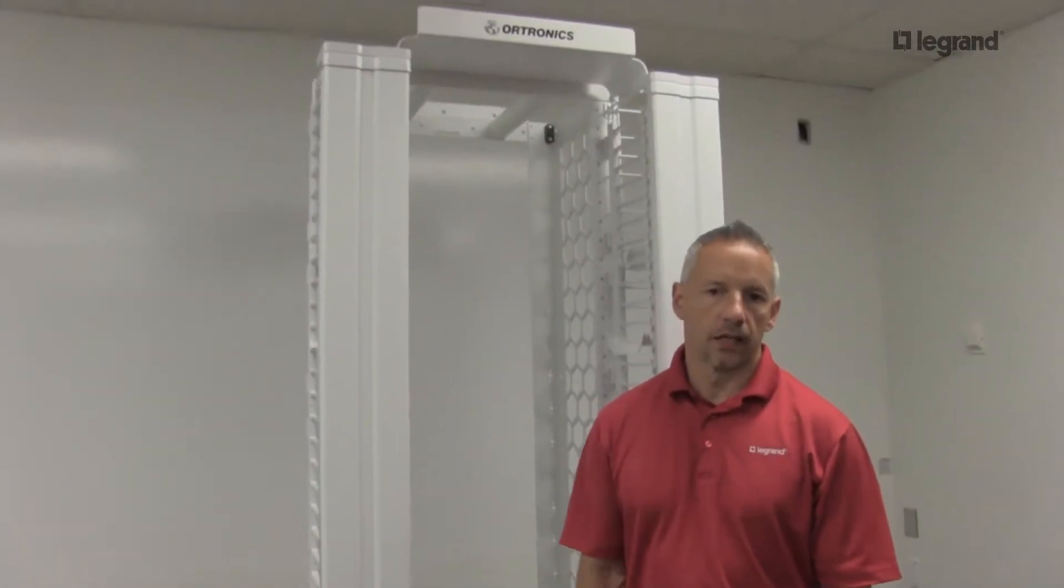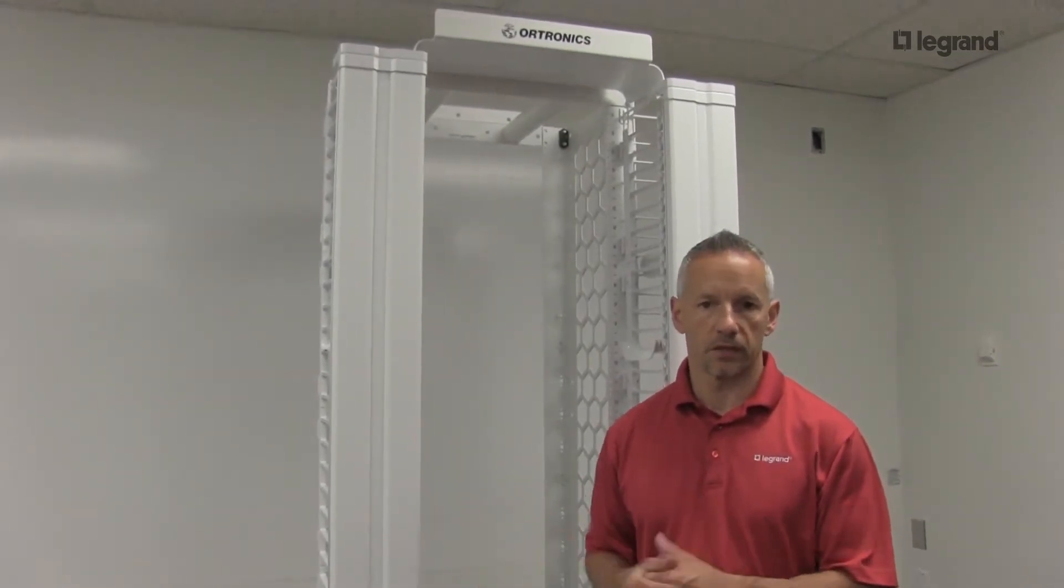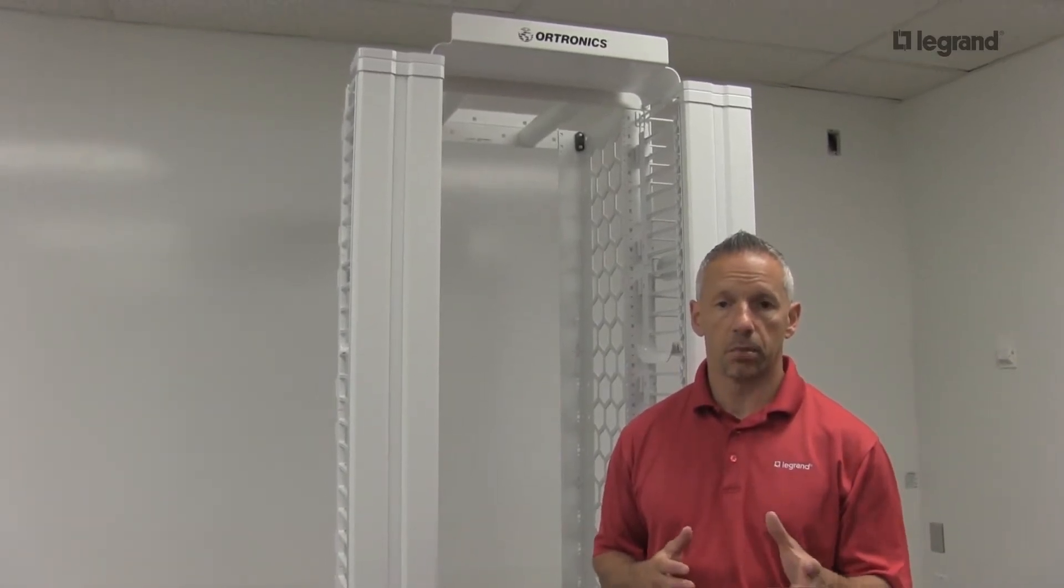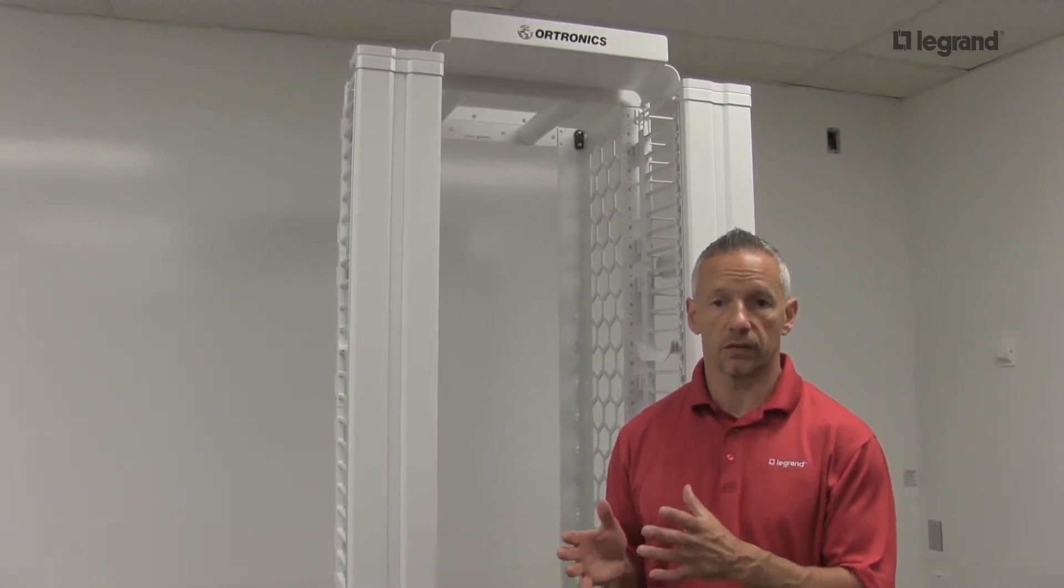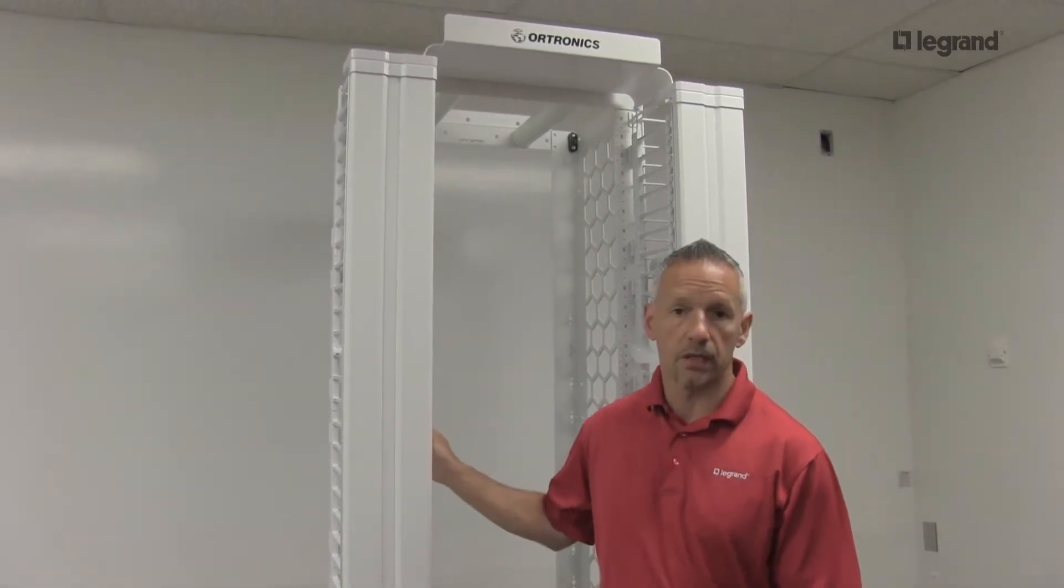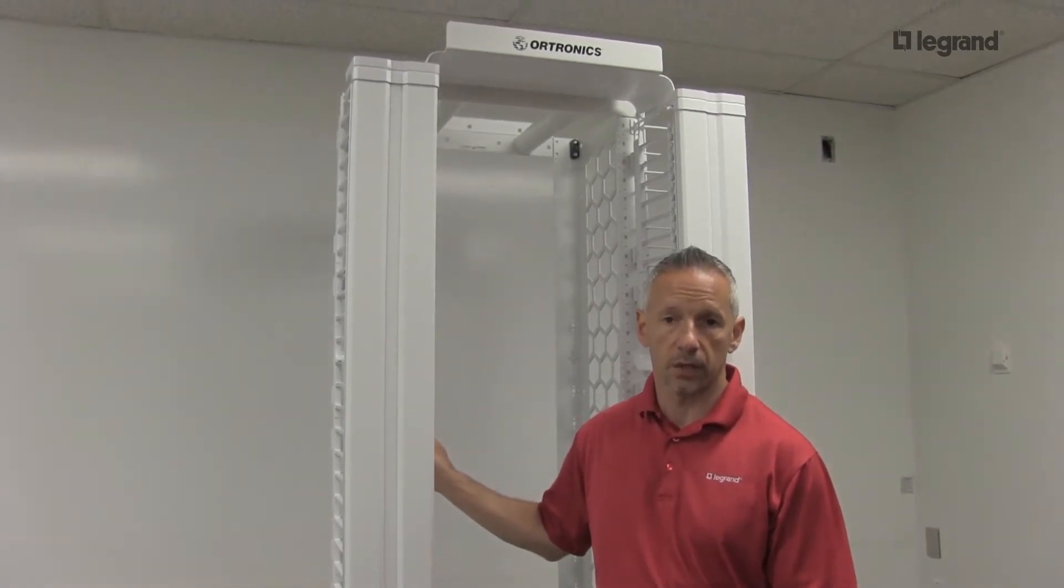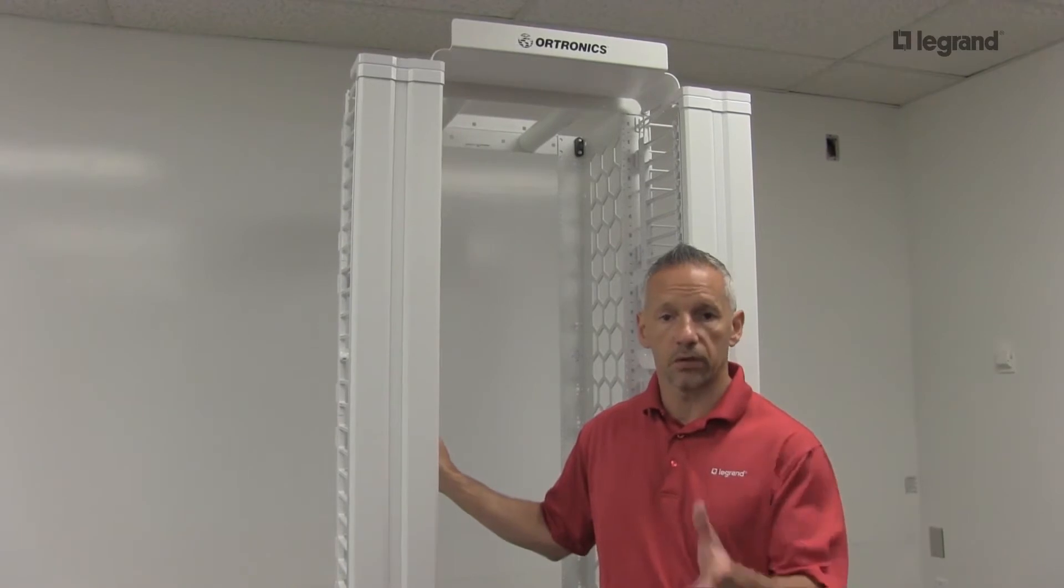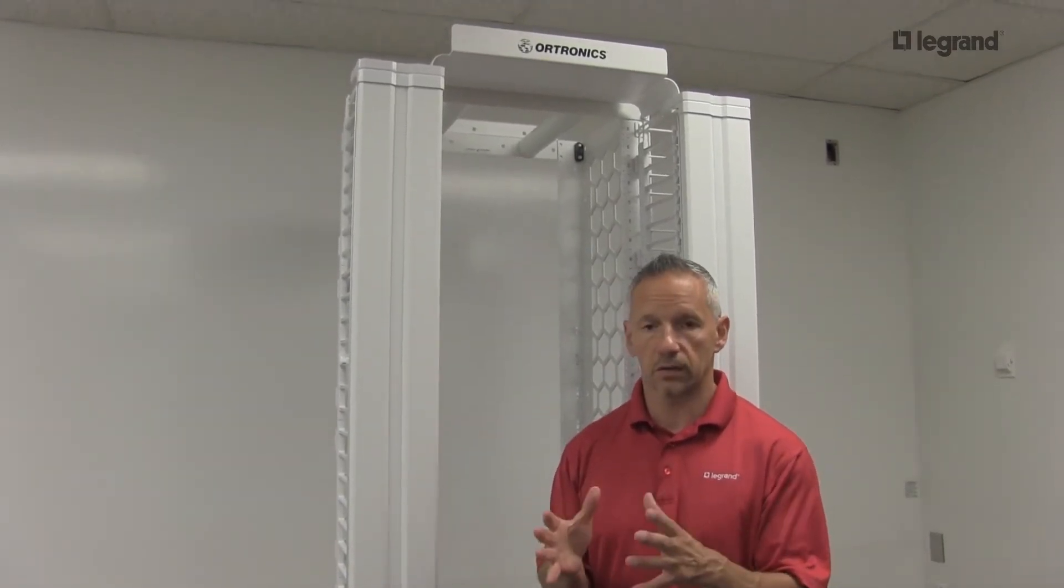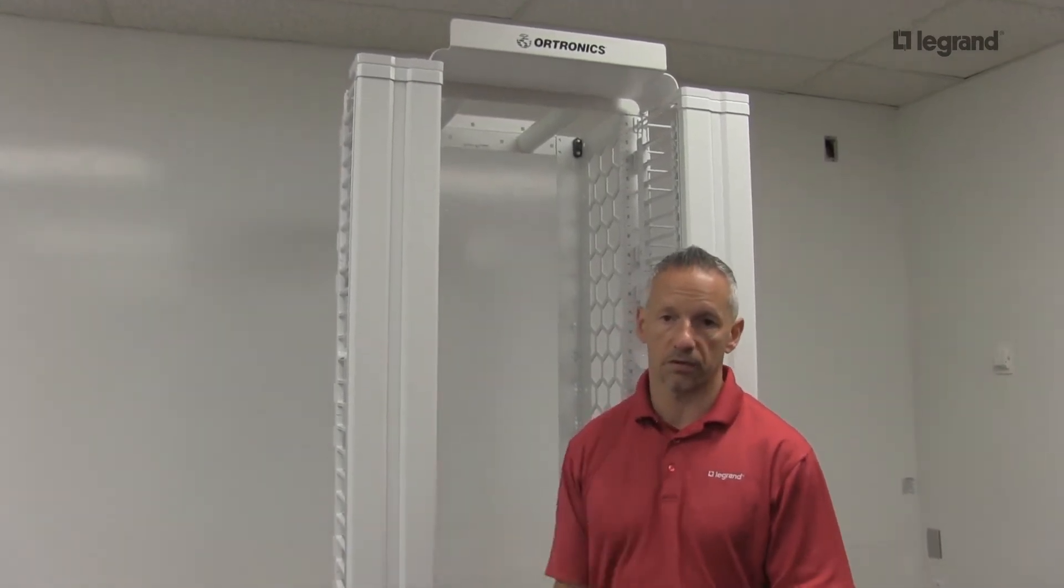The channel rack is available in 6.5 inches deep all the way up to 30 inches deep, so it can be used for both network applications and server and switch applications. Because of the depth up to 30 inches, you can fit a network switch in that rack but also put your network equipment. If you're trying to consolidate multiple racks down to a single rack, the Mighty Mode 20 is perfect for that.